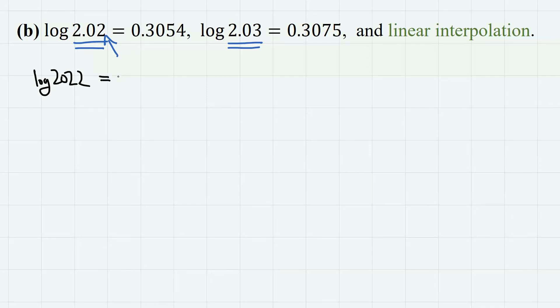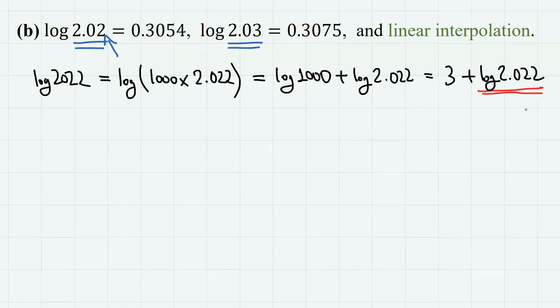So log 2022 is log of 1000 times 2.022. We have log 1000 plus log 2.022, which is 3 plus log 2.022. So we need the approximate value of log 2.022.